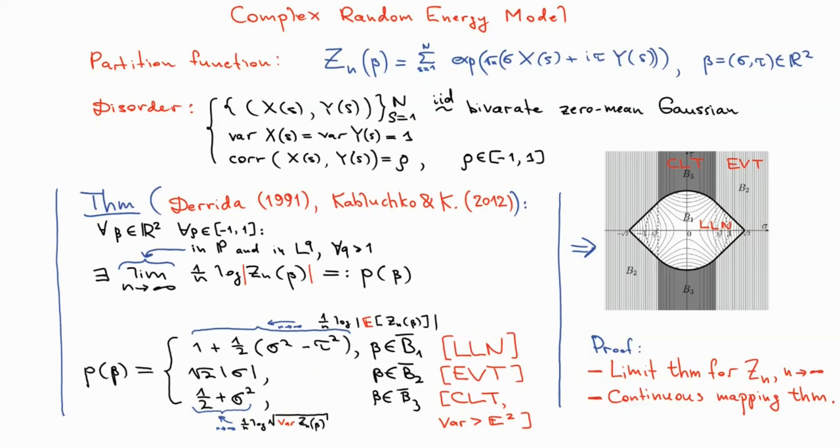Let me now report about our results on the complex random energy model. In the complex random energy model, instead of the independent Gaussian energies, we have independent complex Gaussian random energies. And in addition, our inverse temperature has also two components. We allow for correlations between the real and imaginary part of the energy. Our result is that the limiting log partition function exists in probability and in L^q. And moreover, we have this explicit formula for the limiting log partition function. In contrast to the real valued case, we have an additional phase here.